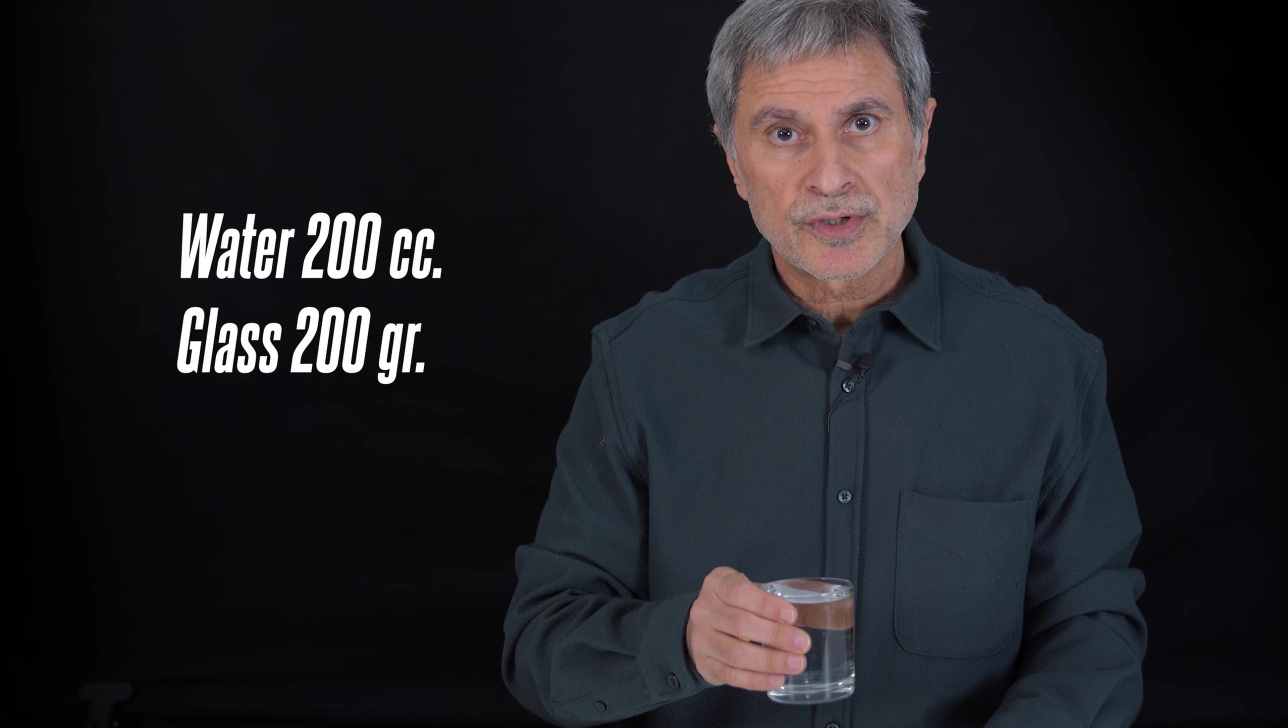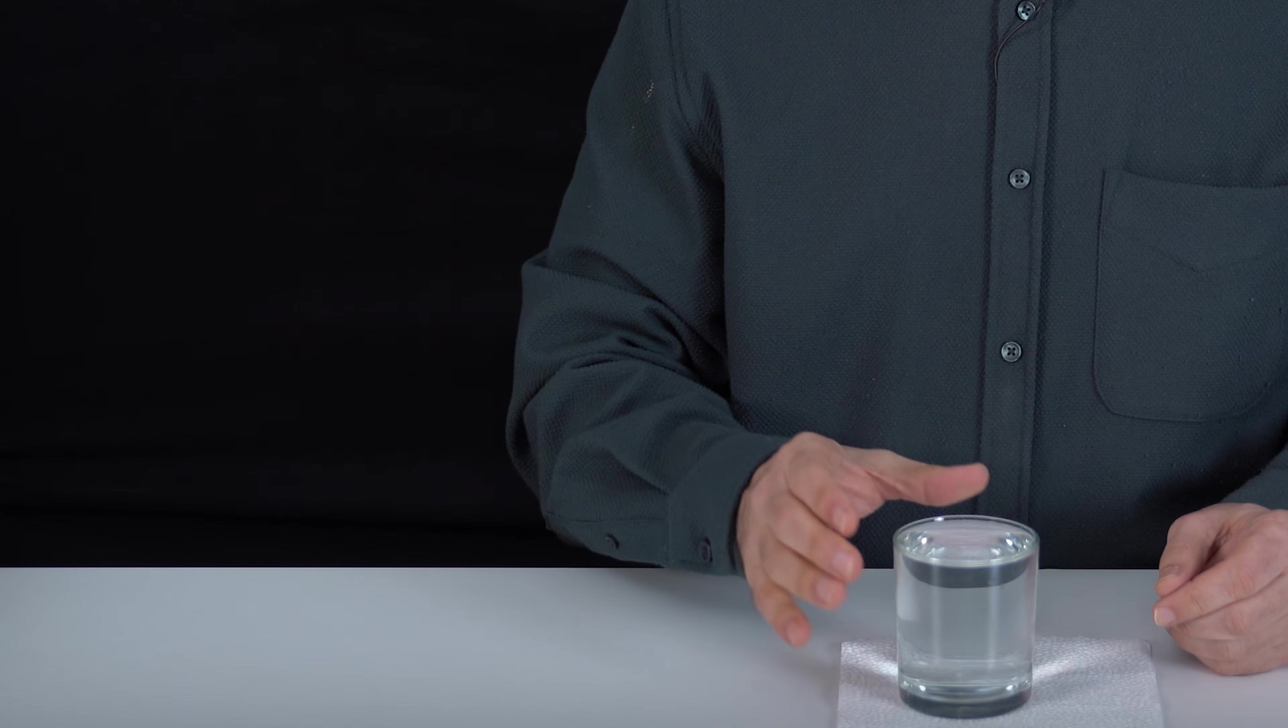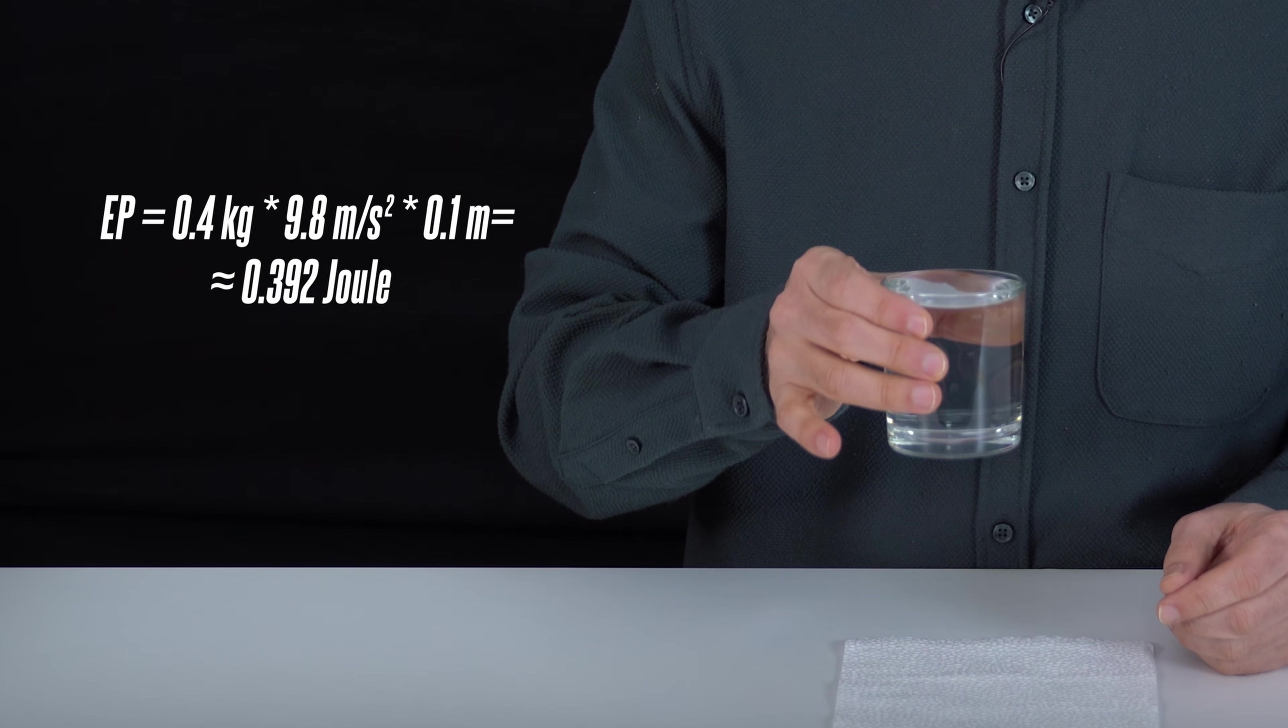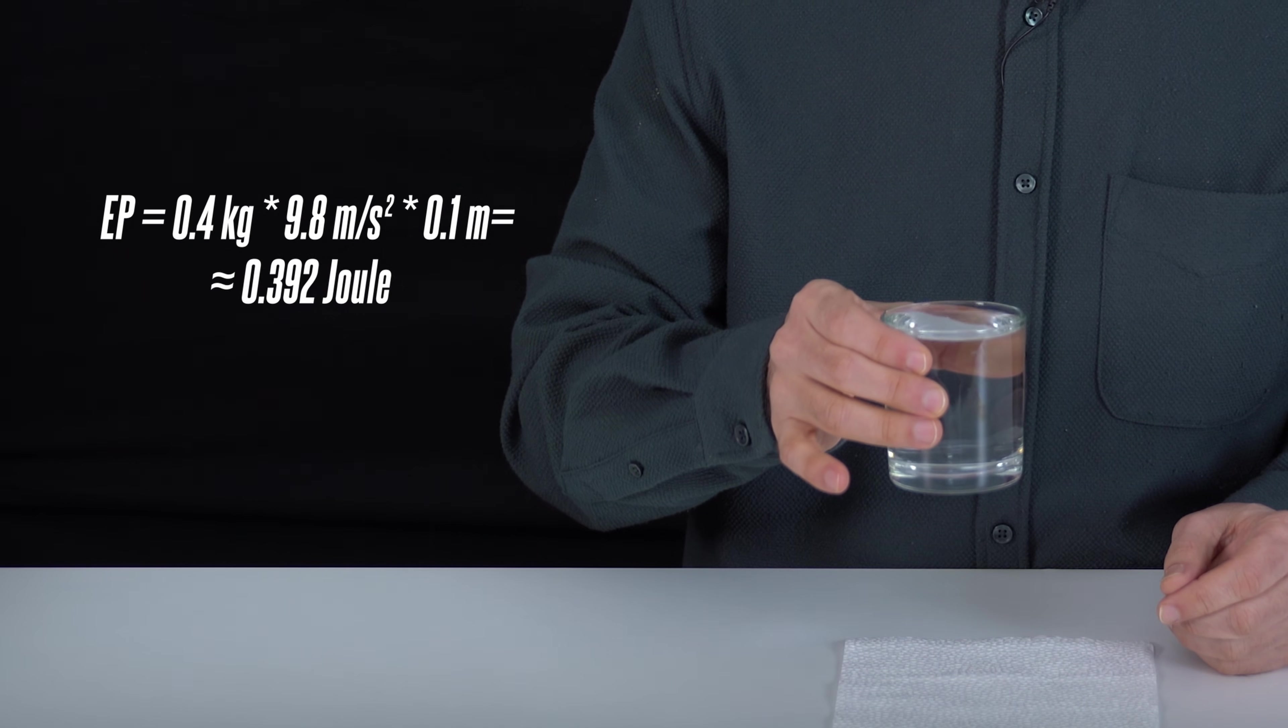There is 200 cubic centimeters of water in this. The weight of the glass is 200 grams. How much energy does it take to lift a 400 gram glass? I calculate according to the formula. An energy of 0.392 joules is required.